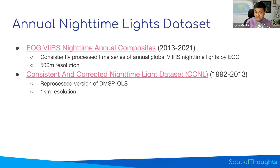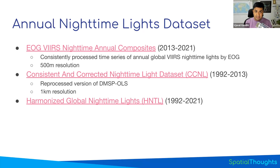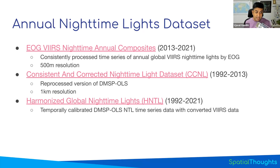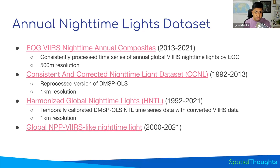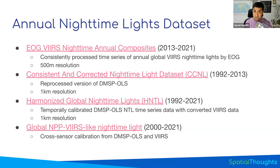Many of you might be interested in long decadal changes, meaning you want to work with both DMSP and VIIRS. Since they are two different satellite programs with different sensors, you cannot use them directly because they measure different things. There are projects that cross-calibrate both sensors to give a consistent time series. There's HNTL, which gives a 1992 to 2021 time series combining both DMSP and VIIRS at one kilometer resolution. There are also other projects that harmonize DMSP to VIIRS, giving a dataset at 500 meter resolution. You can pick whichever dataset suits your application.